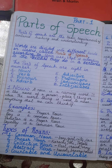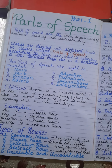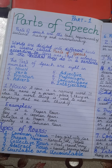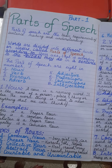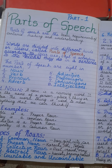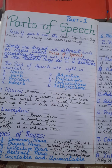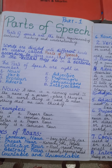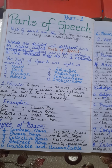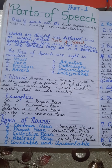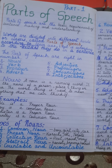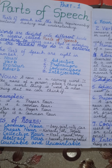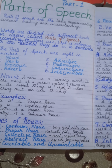The eight parts of speech are: noun, verb, pronoun, adverb, adjective, prepositions, conjunctions, and interjections. In this first part, I'll give you a small definition of each part along with their examples and explanations.